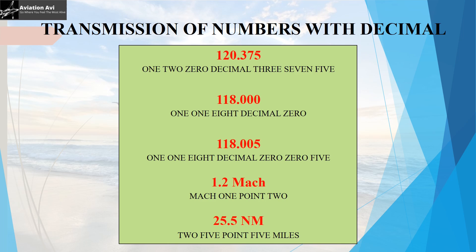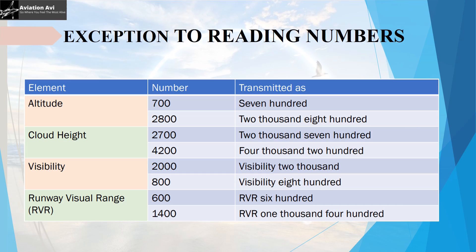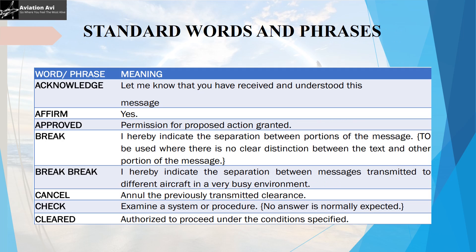Suppose you are spelling 1.2 Mach, then on RT it is spelled as 'Mach one decimal two'. As an exception to transmitting numbers separately, the numbers involved in transmission of altitude, cloud height, visibility, and RVR can be transmitted together. For example, if the altitude of an aircraft is 700 feet, it may be transmitted as '700', or if it is 2800 feet, it can be transmitted as '2800'. The same applies for cloud height, visibility, and RVR.